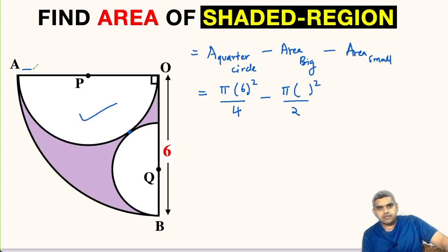We can see here this distance AO is the radius of quarter circle which is 6 units and the 6 units will be the diameter for this bigger semicircle. So its radius will be 3 units. So here it will be 3².